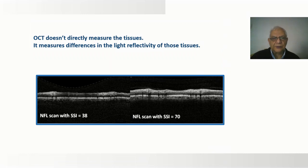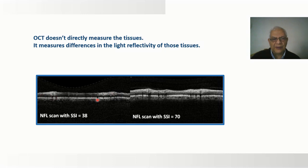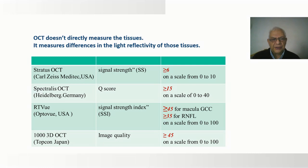OCT does not directly measure tissues; it measures differences in light reflectivity of those tissues. If signal strength is low and you accept such a low value, different layers will appear thinner than they should be. For each OCT machine, there is a minimal value to accept the reports.